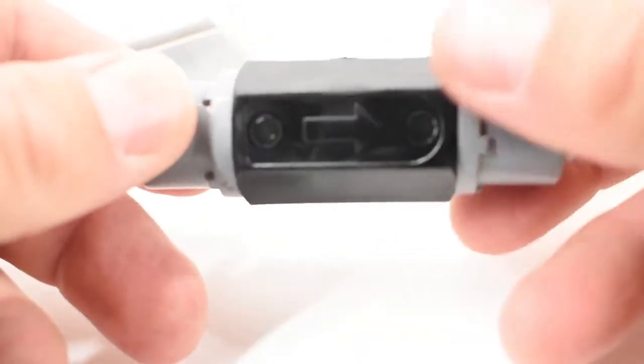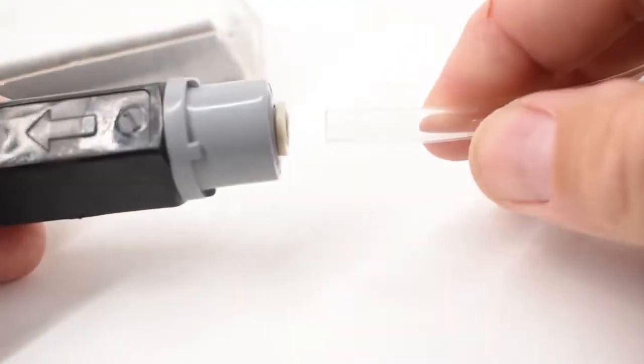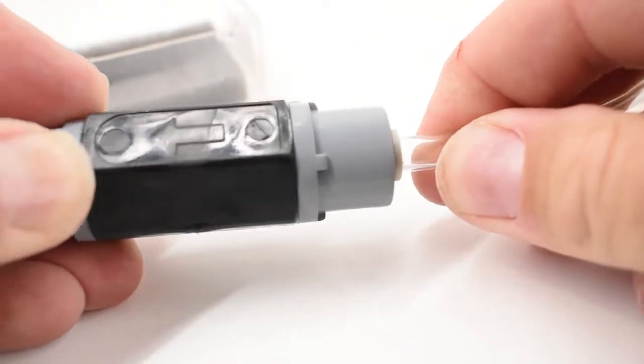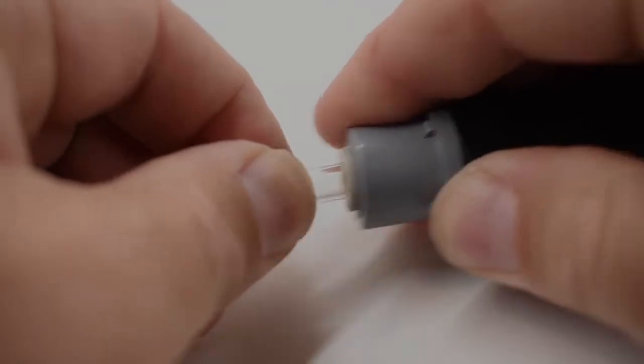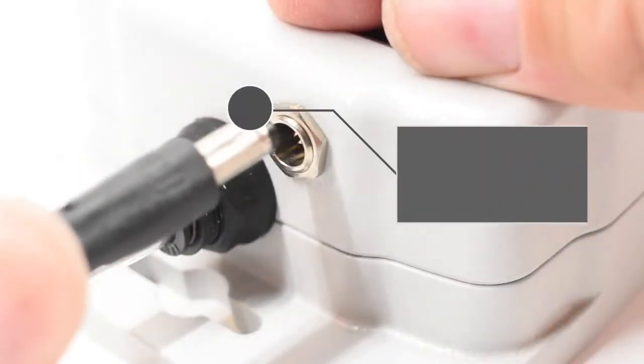Connect the included precision check valve in between the remote box and your reactor. The direction of flow is indicated by an arrow on the check valve. Connect the included power supply to the remote box.